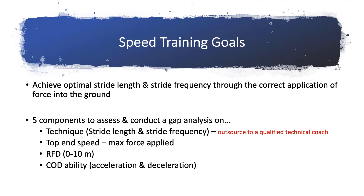The third component to assess is top-end speed. This evaluates the max force applied to the ground and the speed of energy breakdown or ATP breakdown. Fourthly, you want to assess the individual's rate of force development, which can be evaluated with a 0 to 5 meter and/or 0 to 10 meter, as well as specific intervals of distance.